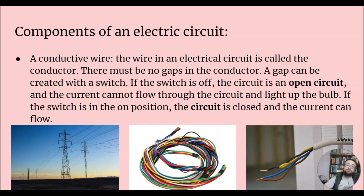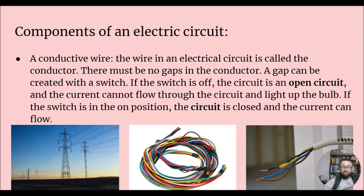The conductive wire — the wiring in an electric circuit — is called the conductor. There must be no gaps in the conductor. A gap can be created with a switch. If the switch is off, the circuit is an open circuit and the current cannot flow through the circuit or light up the bulb. If the switch is in the on position, the circuit is closed and the current can flow again.